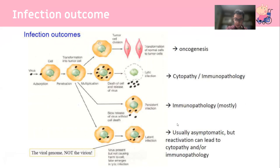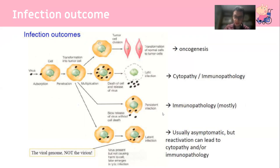To summarize outcomes: viruses can lead to oncogenesis - conversion into tumor cells - and cytopathology. Persistent infection keeps the immune system continually exposed to antigens, promoting a pro-inflammatory cytokine response, recruiting T lymphocytes and stimulating B and T cell production, leading to significant damage and necrosis. Latent infection is usually asymptomatic but reactivation can lead to cytopathy and immunopathology, as you'll understand from studying shingles.